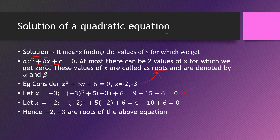To check if minus 3 and minus 2 are roots of x squared plus 5x plus 6 equals 0: substituting x equals minus 3 gives 9 minus 15 plus 6 equals 0. Substituting x equals minus 2 gives 4 minus 10 plus 6 equals 0. Both give zero, so they are roots. However, substituting x equals 1 gives 1 plus 5 plus 6 equals 12, which is not zero, so 1 is not a root.